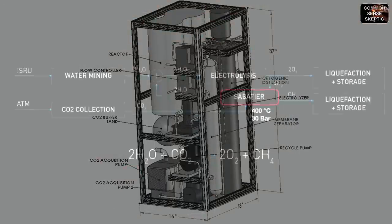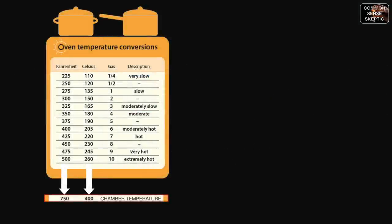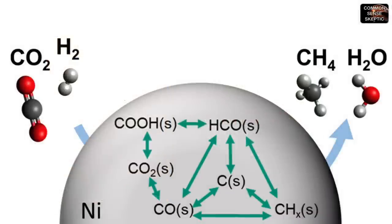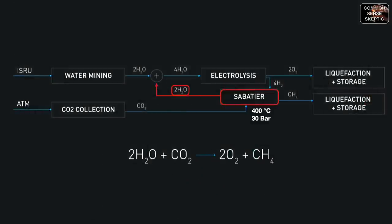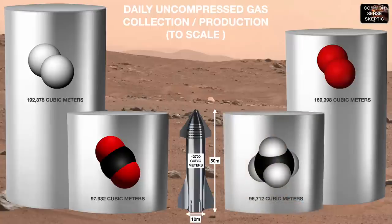The Sabatier process would take the stored carbon dioxide and hydrogen gases, heat the mixture up to 400 degrees Celsius, pressurize the reaction vessel to 30 bar across the nickel catalyst, and produce methane and water. That water could possibly be cycled back into the system but would have to be electrolyzed again for the hydrogen.